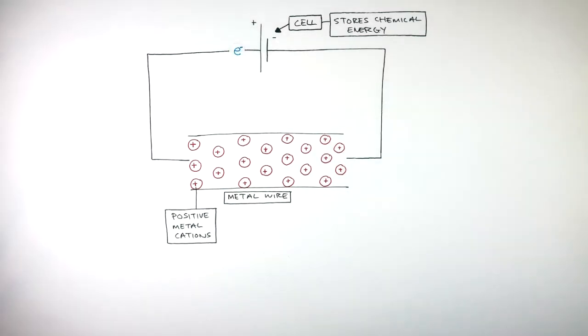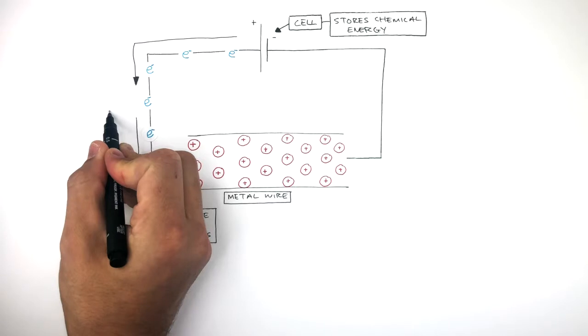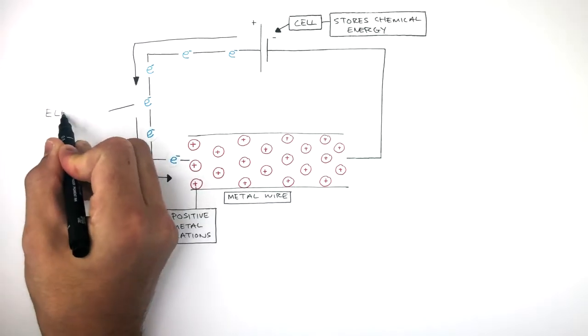The cell pushes the electrons out of the positive terminal. These electrons flow through the metal wire. The flow of electrons is called the electric current.